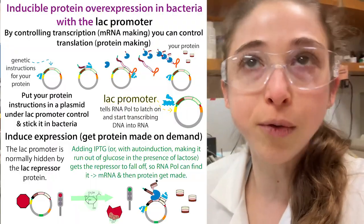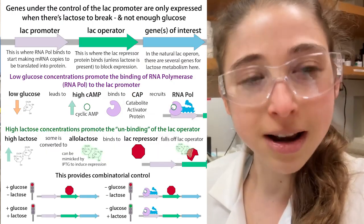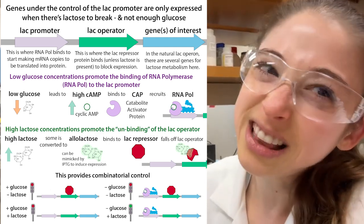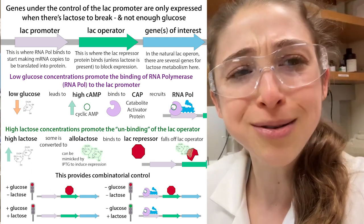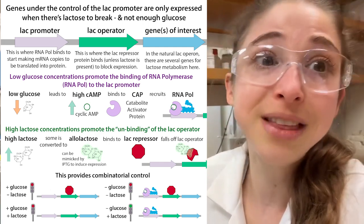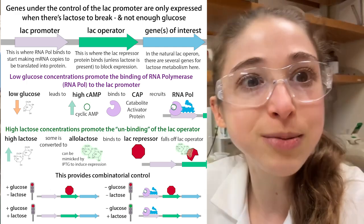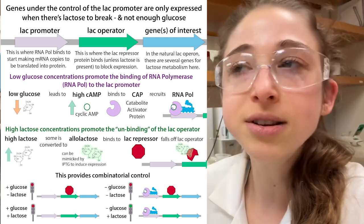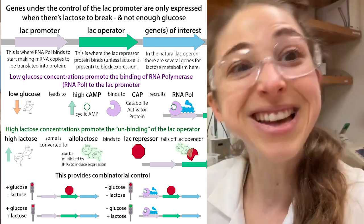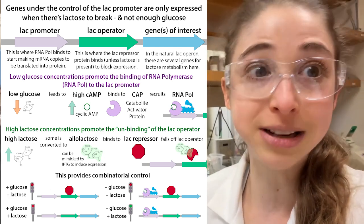It uses the same system as IPTG-based induction — the lac operon. Basically, these bacteria can eat lactose, but they really prefer glucose. If there's glucose around, even if there's lactose around, they're going to eat the glucose. If they run out of glucose, they'll switch to lactose, but only if there's actually lactose around. There's a regulatory system where if there isn't glucose and there is lactose, that's the only time they make the genes that allow them to break down and eat lactose.